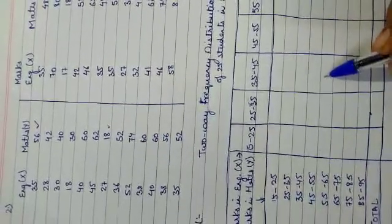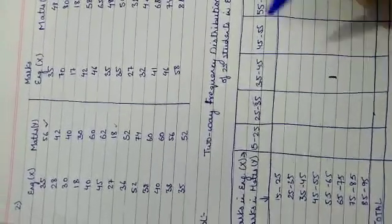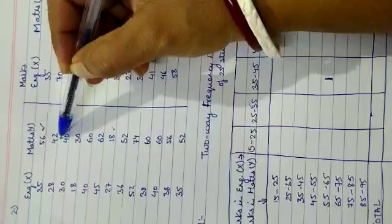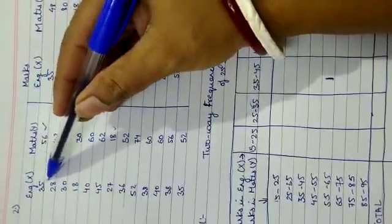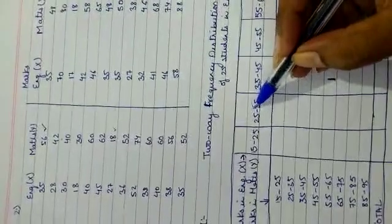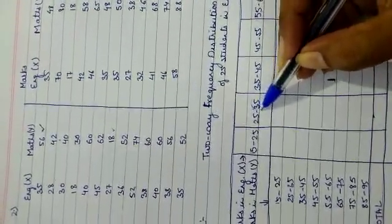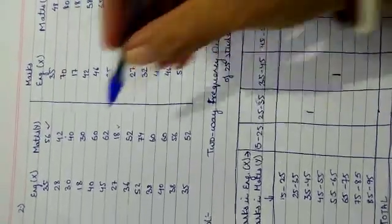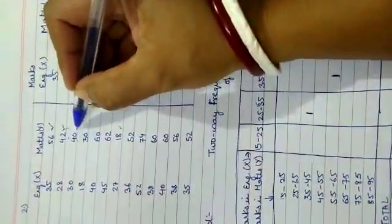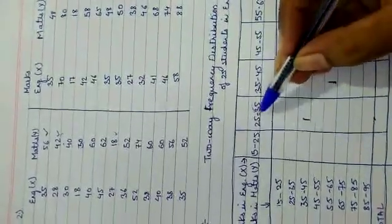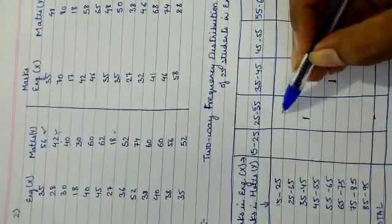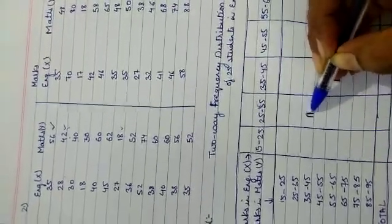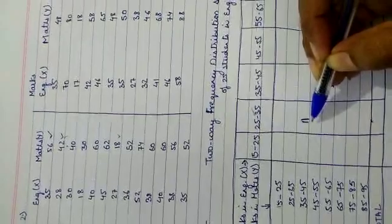The second pair is X=28 and Y=42. X=28 falls in the 25–35 interval, and Y=42 falls in the 35–45 interval, so one tally mark goes there. Next is X=30 and Y=40: X=30 falls in 25–35 and Y=40 falls in 35–45, so one tally mark there as well.